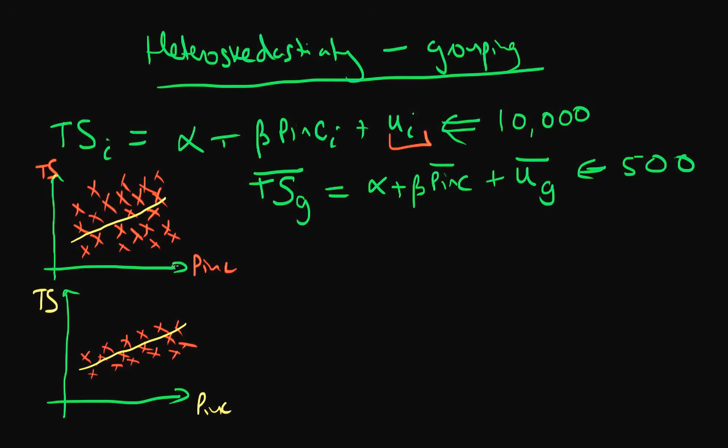So more often than not, if we use individual level data we are going to obtain estimates of beta which are closer to the true population value of beta, so the true population effect of parental income on test scores.